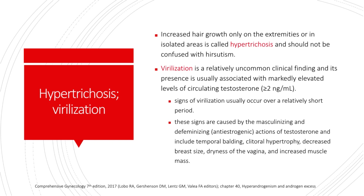Let us define the terms hypertrichosis and virilization, as these are related to the term hyperandrogenism. Increased hair growth only on the extremities or in isolated areas is called hypertrichosis and should not be confused with hirsutism. Virilization is a relatively uncommon clinical finding, and its presence is usually associated with markedly elevated levels of circulating testosterone. The signs of virilization usually occur over a relatively short period and include temporal balding, clitoral hypertrophy, decreased breast size, dryness of the vagina, and increased muscle mass.